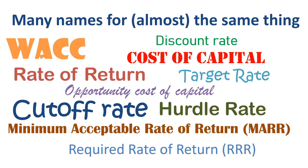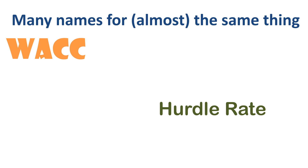Depending on the company you work for, any one of these can be the name for a minimum return that the business wants a project manager to commit to, before an investment budget is granted. Let's keep things simple and focus on the two most common ones out of this long list: WACC and hurdle rate.